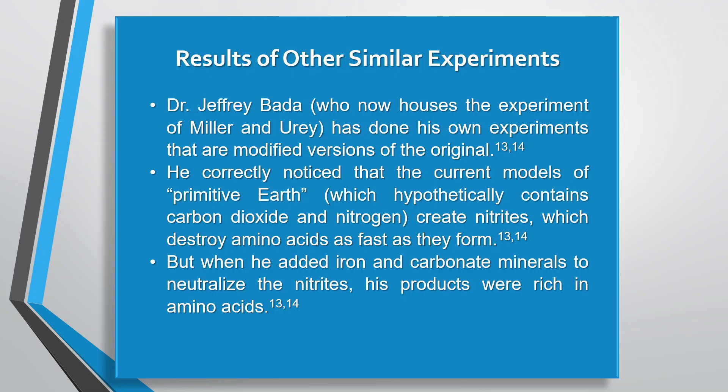Dr. Jeffrey Beta, who now houses the Miller-Urey experiment, has done his own experiments as modified versions of the originals. He correctly noticed that current models of primitive earth — which hypothetically contain carbon dioxide and nitrogen — create nitrites, which destroy amino acids as fast as they can form. But when he added iron and carbonate minerals to neutralize the nitrites, his products were rich in amino acids.